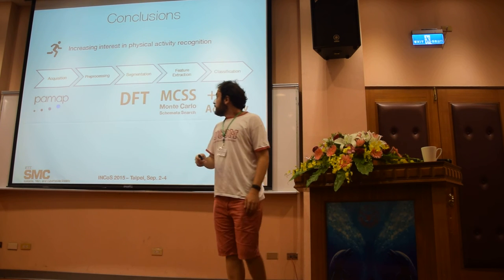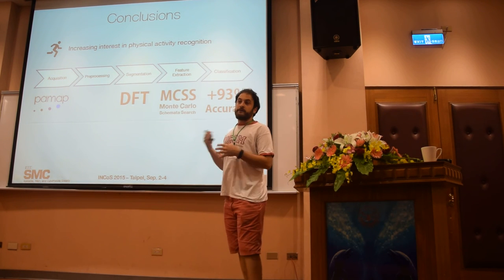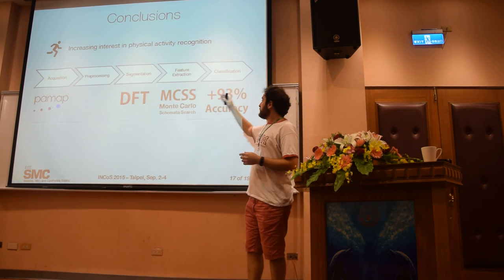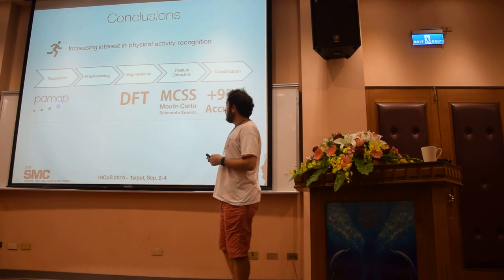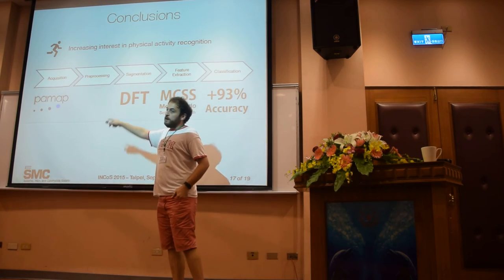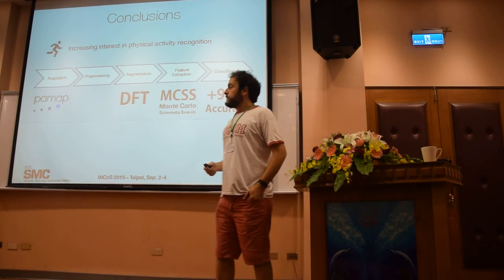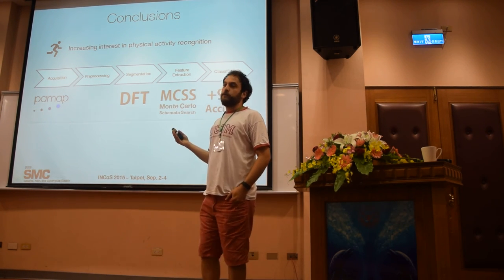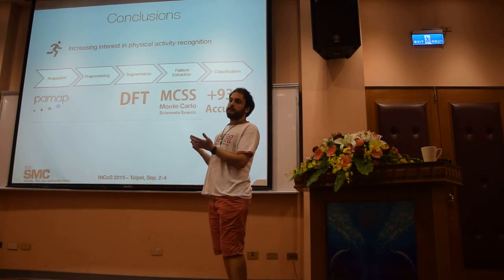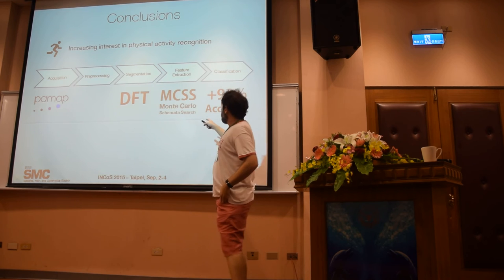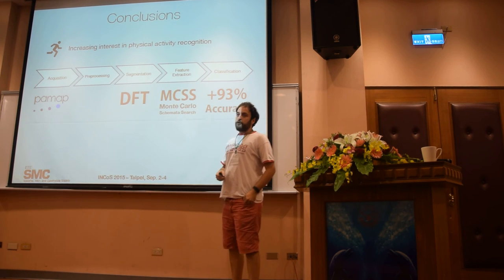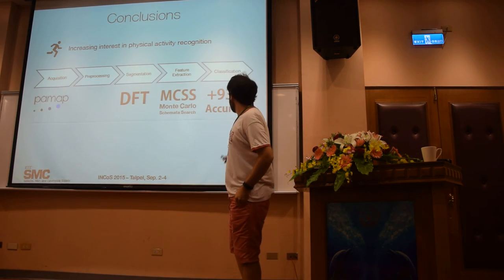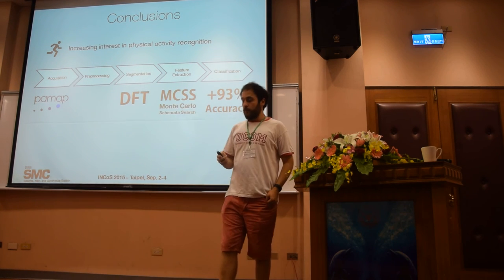In conclusion, we have seen that there is increasing interest in physical activity recognition due to various factors. We described the activity recognition chain as a sequence of steps to carry out this task. We used the publicly available PAMAP dataset from the UCI Machine Learning Repository, performed basic preprocessing, computed the discrete Fourier transform to convert signals from the time domain to the frequency domain, applied Monte Carlo Schemata Search for binary feature optimization, and achieved a classification accuracy of over 93%.